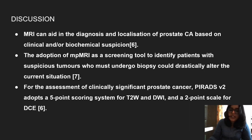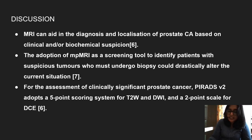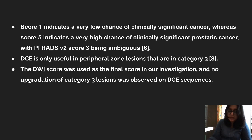Coming to discussion, MRI can aid in the diagnosis and localization of prostate cancer based on clinical and/or biochemical suspicion. Adoption of multi-parametric MRI as a screening tool to identify patients with suspicious tumors who must undergo biopsy could drastically alter the current situation. For assessment of clinically significant prostate cancer, PIRADS Version 2 adopts a 5-point scoring system for T2-weighted and diffusion imaging, and a 2-point scale for dynamic contrast enhancement. Score 1 indicates very low chance of clinically significant cancer, while score 5 indicates very high chance. Score 3 is ambiguous; dynamic contrast enhancement is only useful for peripheral zone lesions in category 3.